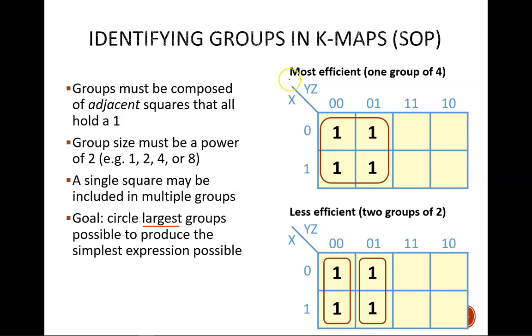Over the next couple slides, I will show the same example, but with two different groupings. The most efficient example is what I should do, because it uses the largest possible group. We'll see that this other example does still produce a logically identical equation, but is less efficient.